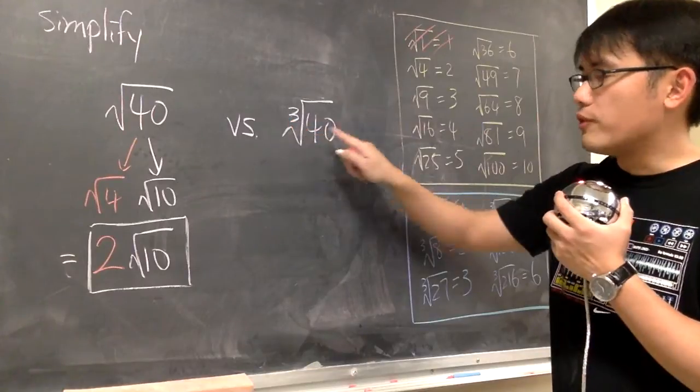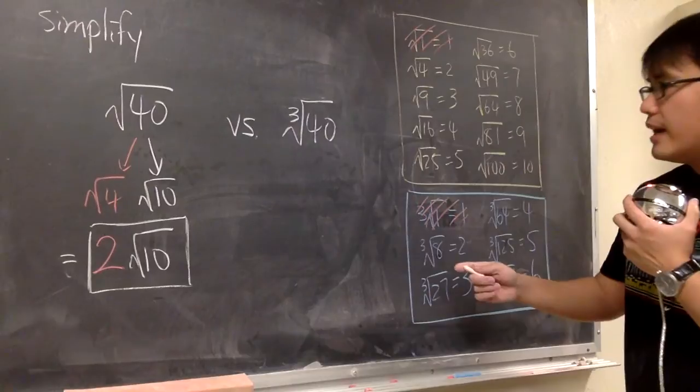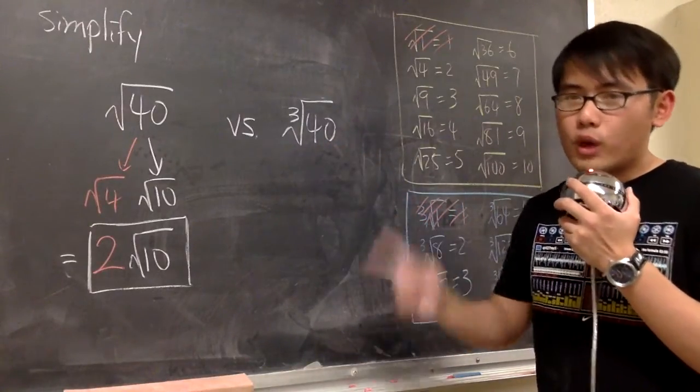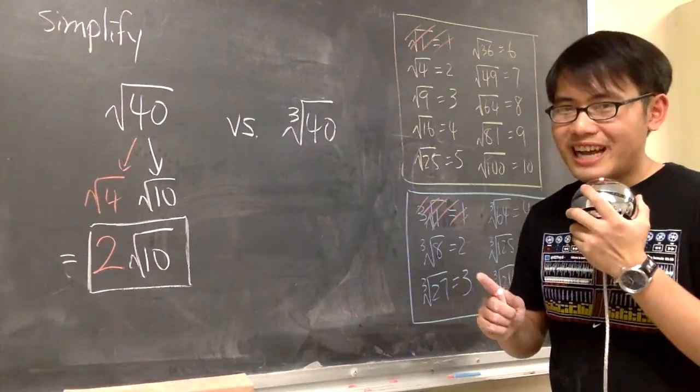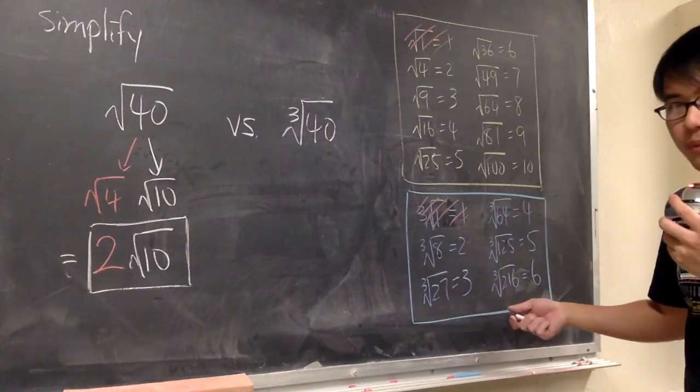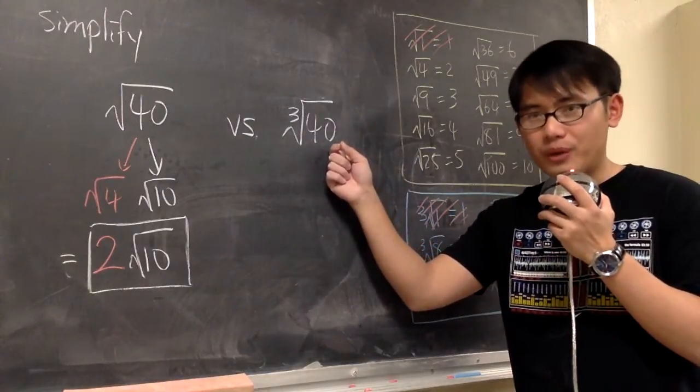And then right here, when we're talking about the cube root of 40, we have to refer to the cube root table. And we do the same thing. Look at 40, and then ask ourselves, what times what gives us 40? But this time, one of the numbers shall be from here, a perfect cube. And I notice right away, 8 times 5 will give us 40.